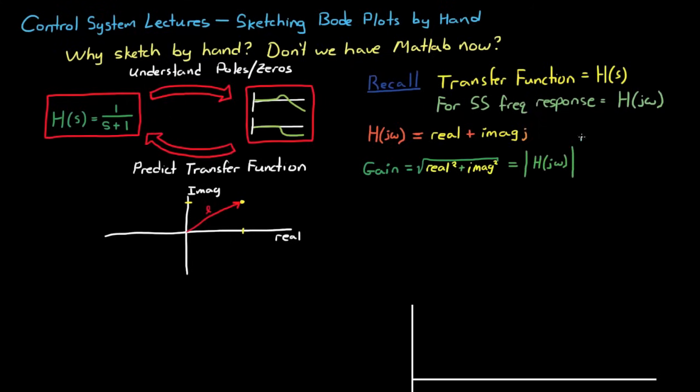Or in shorthand notation, you can just put these two vertical lines around it, which means the magnitude of H. And the phase is just the angle of the vector off the positive real line. And we can write this as the arctangent 2 of the imaginary part and the real part. And in shorthand notation, you can just write this as the argument of H.